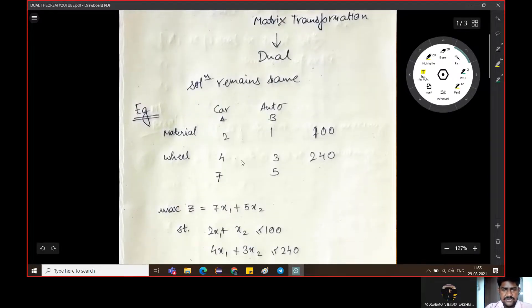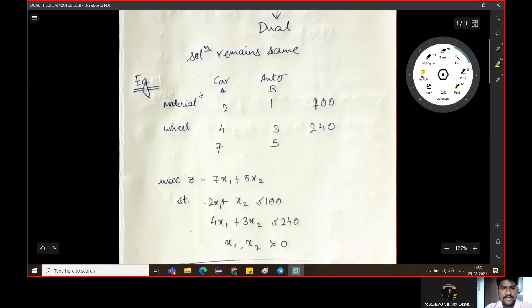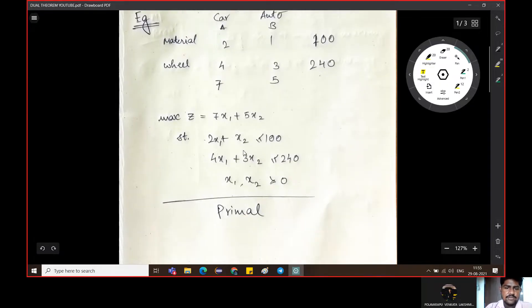In the last video, there is a toy manufacturing company and two toys are manufactured - car and auto - and the material and wheels are used. In this statement we will draw this table and draw some equations here.